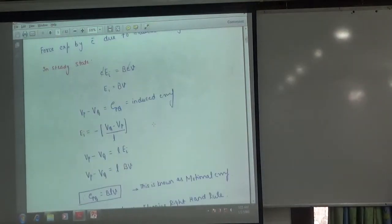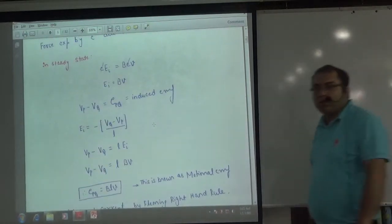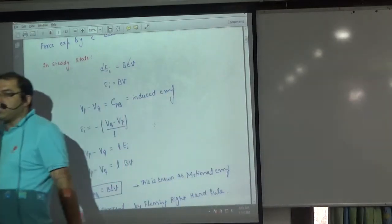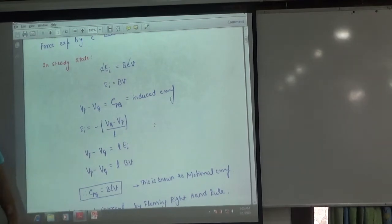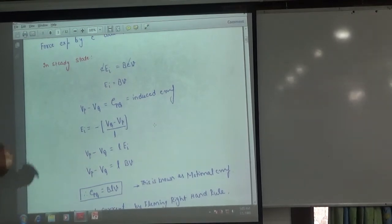What will be the steady state equation? In steady state, the upper force QE is equal to the lower force BQV. Q cancels. So the induced electric field EI equals BV.